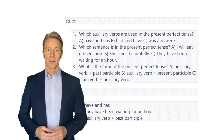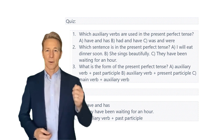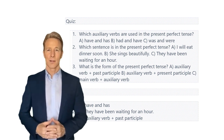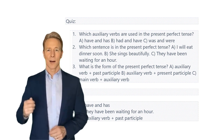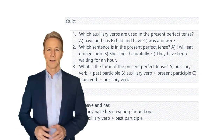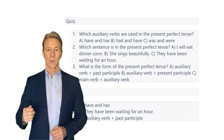Quiz. Which auxiliary verbs are used in the present perfect tense? A. Have and has. B. Had and have. C. Was and were.